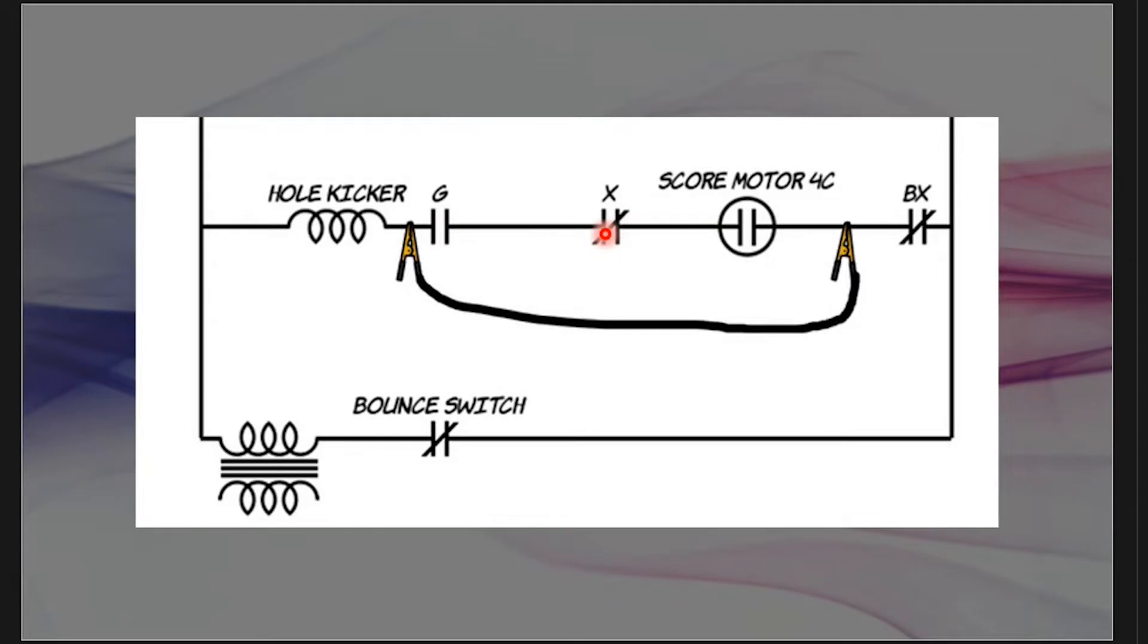On the next one, what I'm doing is I'm going right on the right side of score motor 4C. And now the path that it's going to take is it's going to go through the solenoid, come down through the jumper, go through B of X and all the way back to the start here. If I touch the alligator clip here on motor 4C and it fires, that tells me BX is closed and this is working.